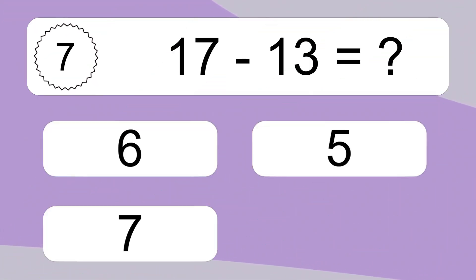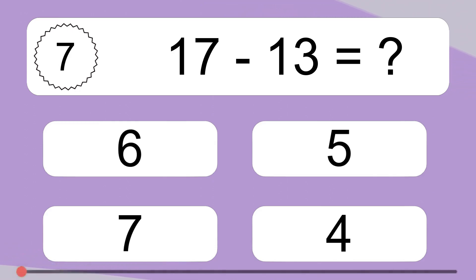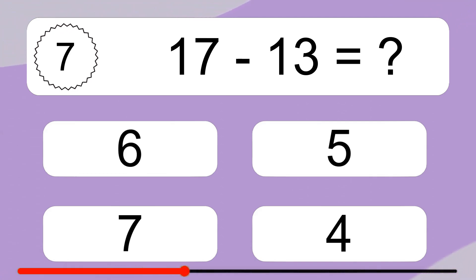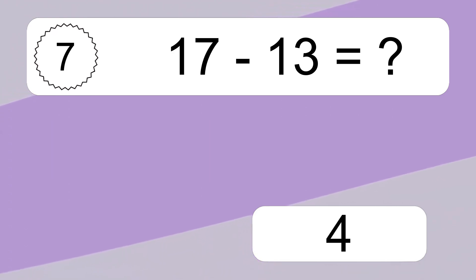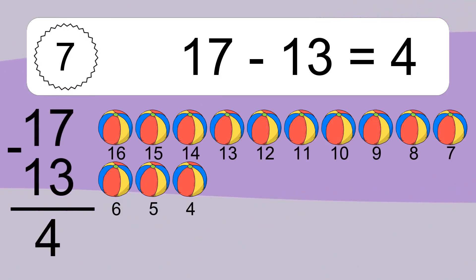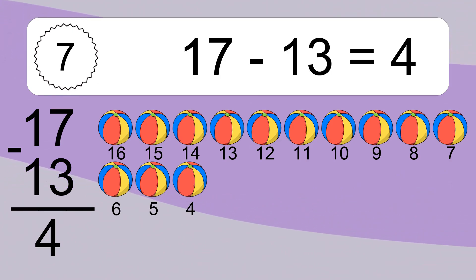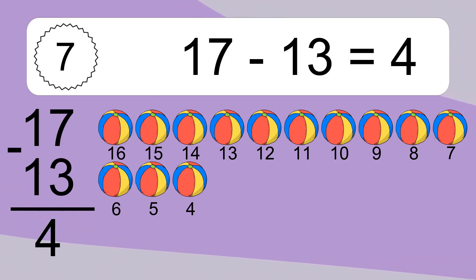17 minus 13 equals what? 17 minus 13 equals 4. Let's count it: 16, 15, 14, 13, 12, 11, 10, 9, 8, 7, 6, 5, 4.